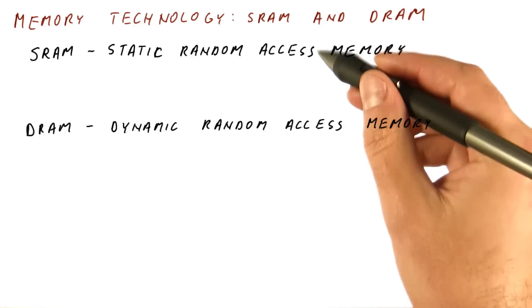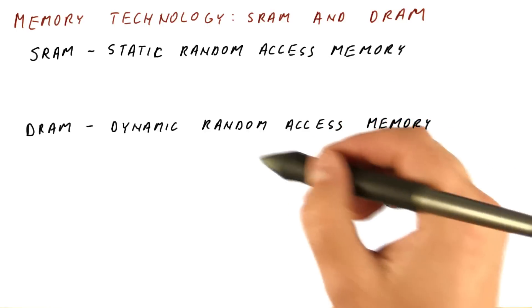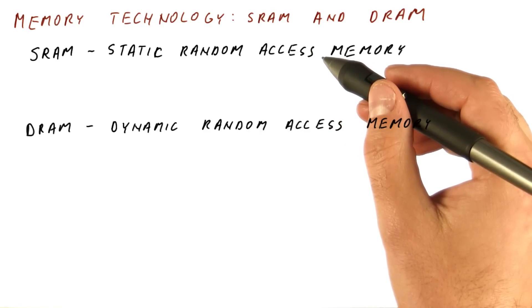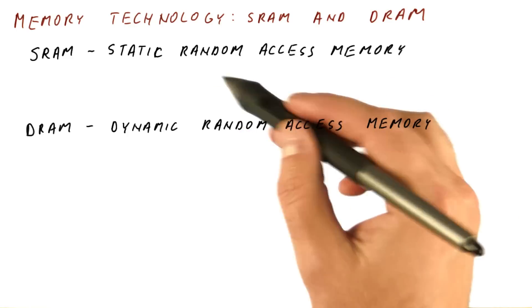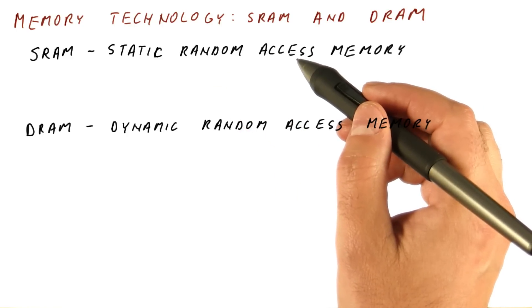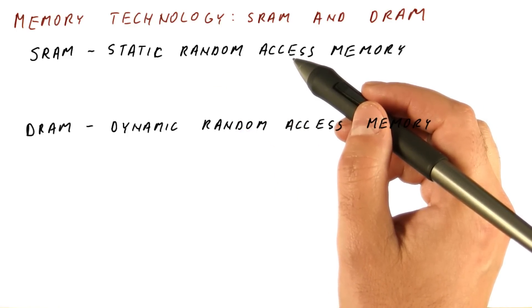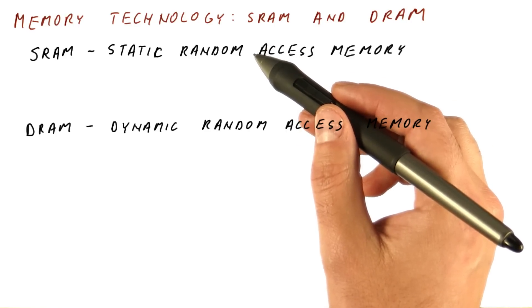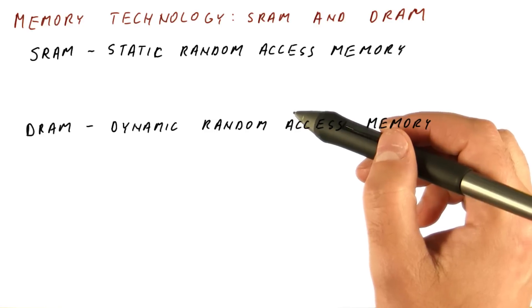The random access part in both names refers to the fact that we can access any memory location by address without needing to go through all the memory locations. Random access is opposed to sequential access like a tape where you have to scan through the whole tape to get somewhere. With memory, we can arbitrarily access any part without needing to get to it sequentially.